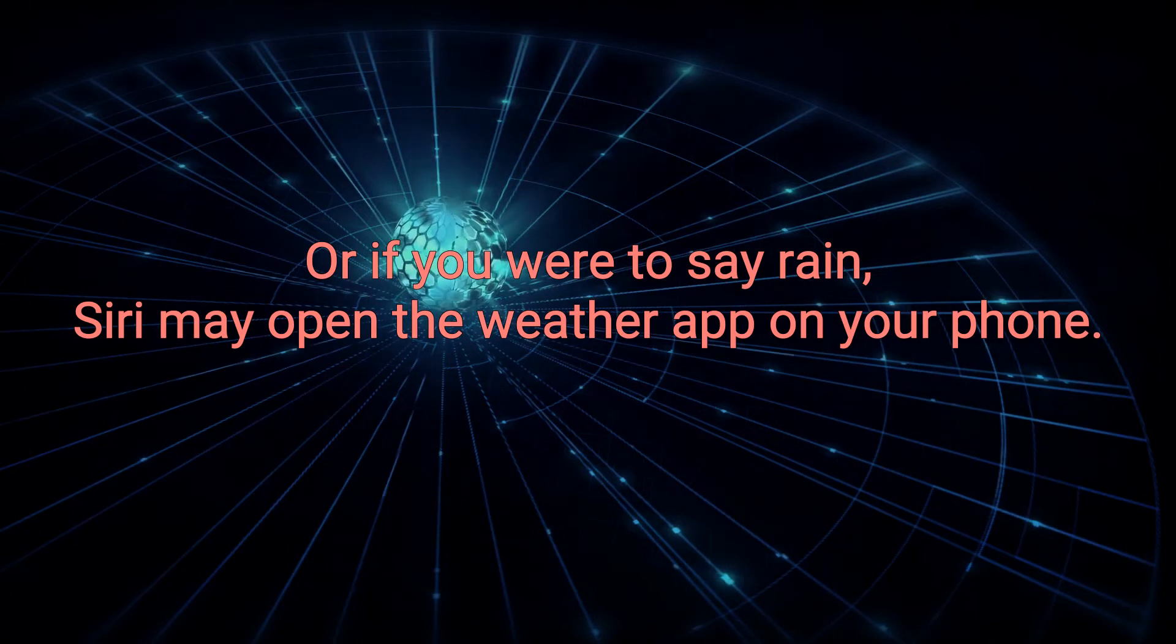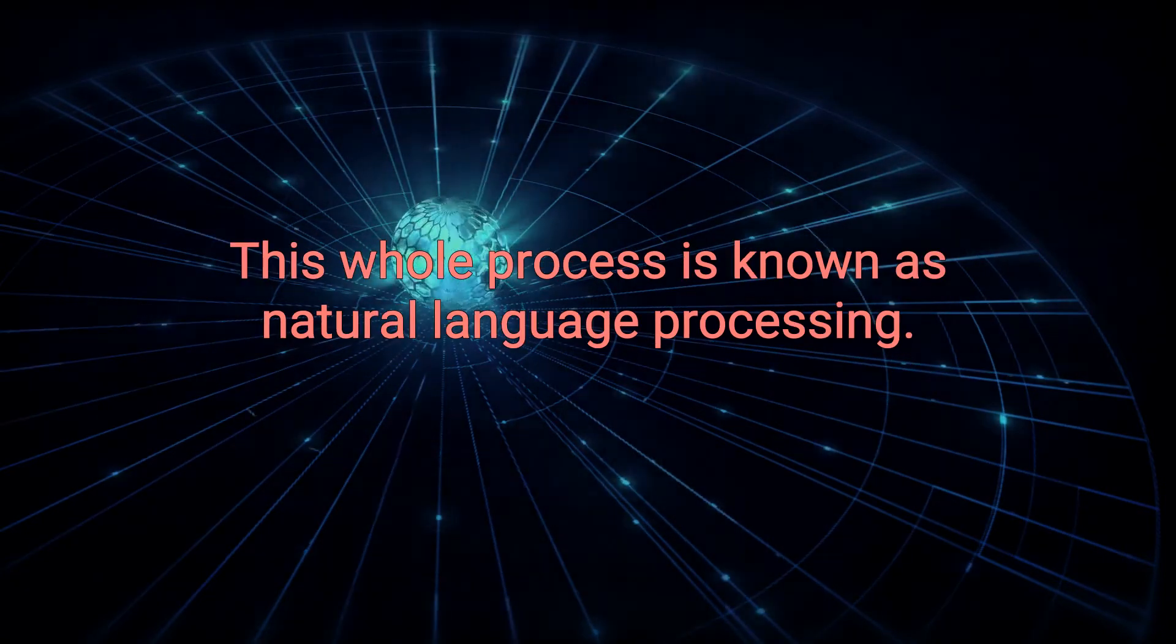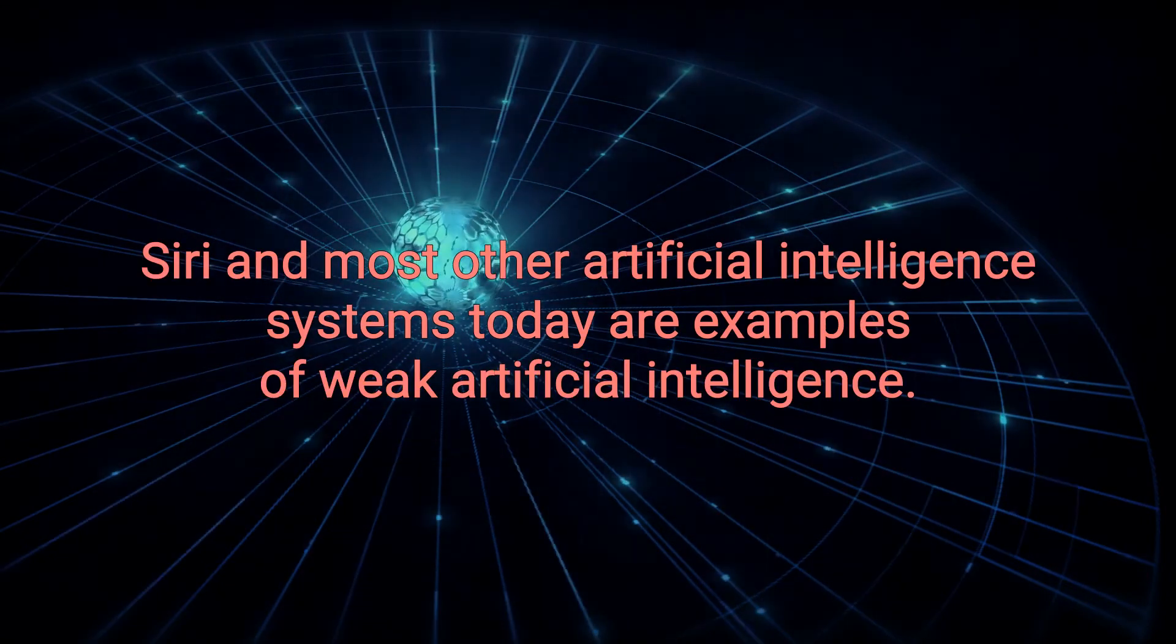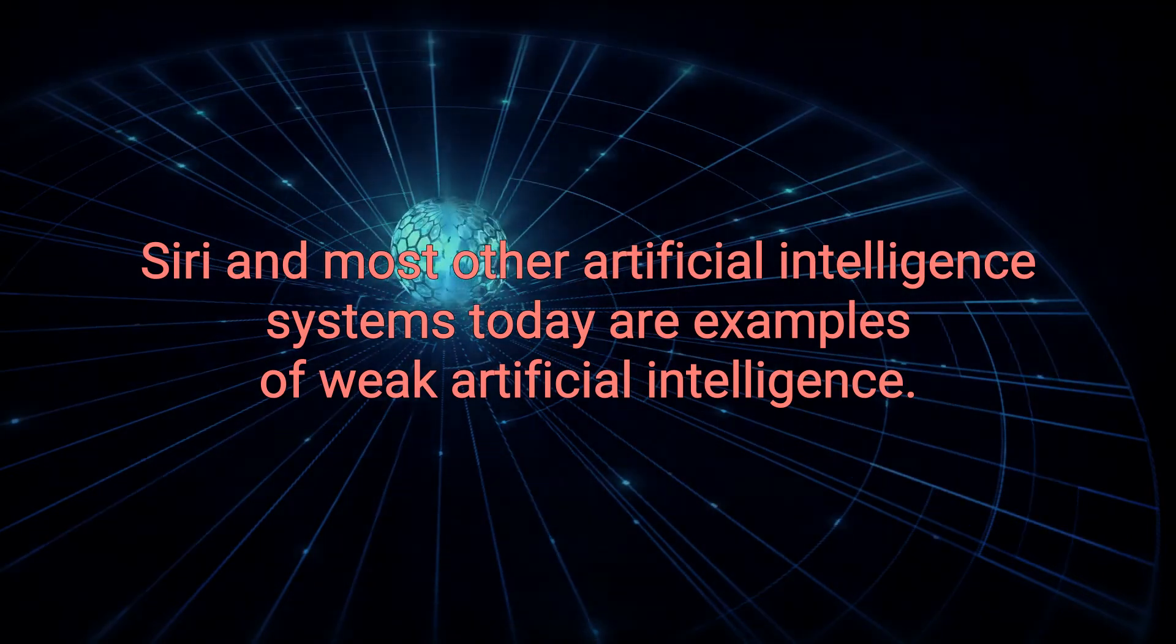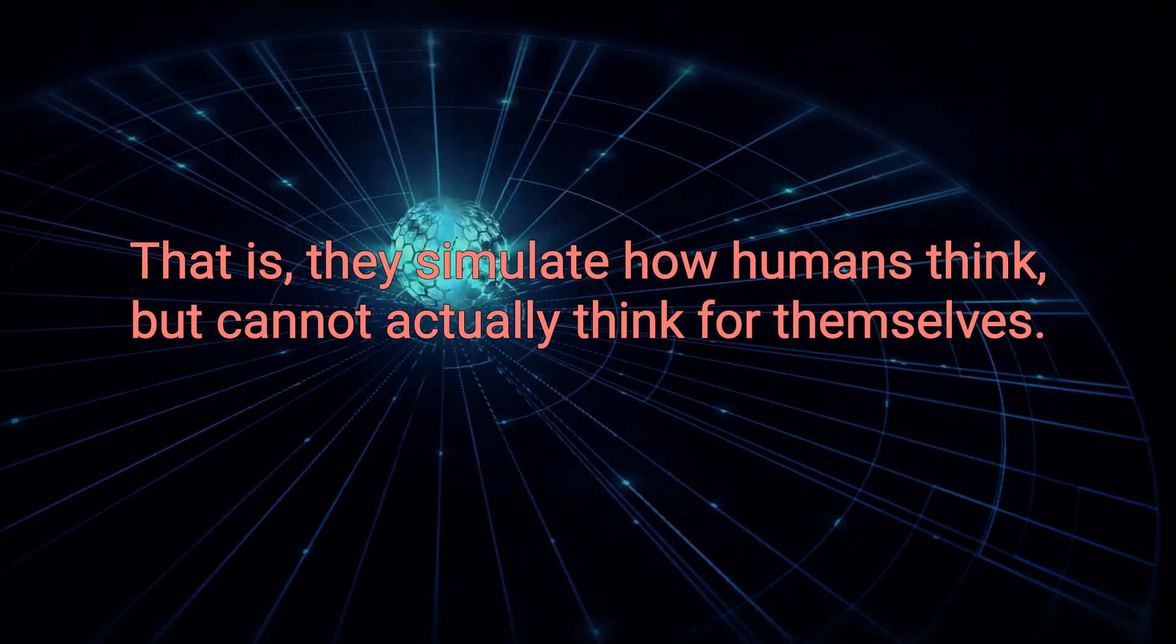Siri then tries to make sense of the word by doing an online search, or, if you were to say rain, Siri may open the weather app on your phone. This whole process is known as natural language processing. Siri and most other artificial intelligence systems today are examples of weak artificial intelligence. That is, they simulate how humans think, but cannot actually think for themselves.